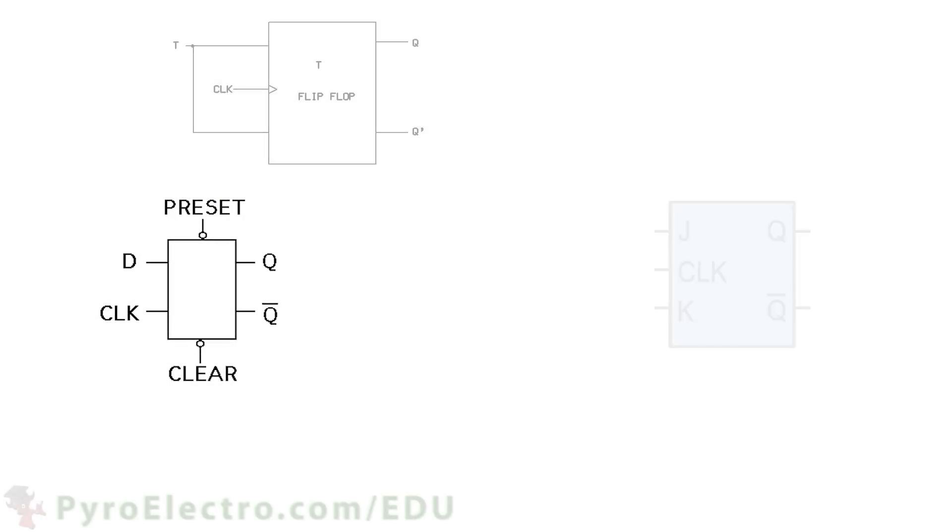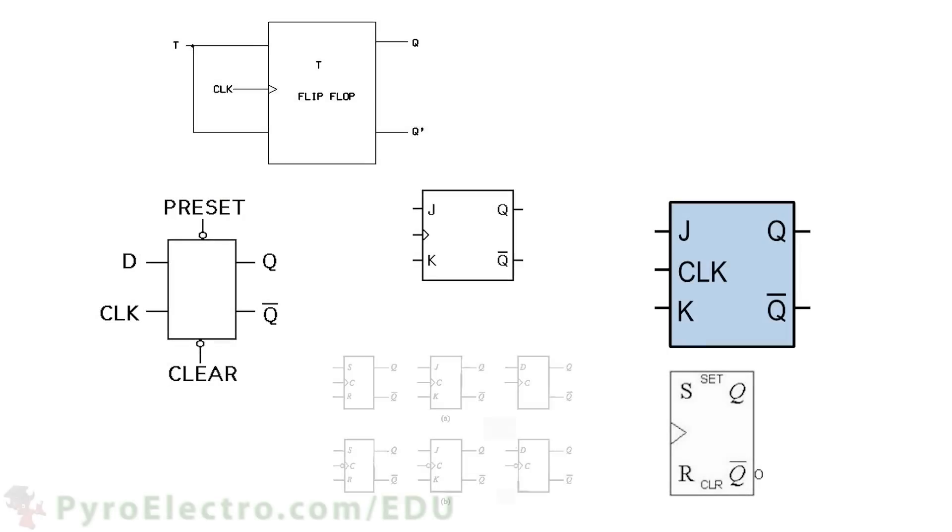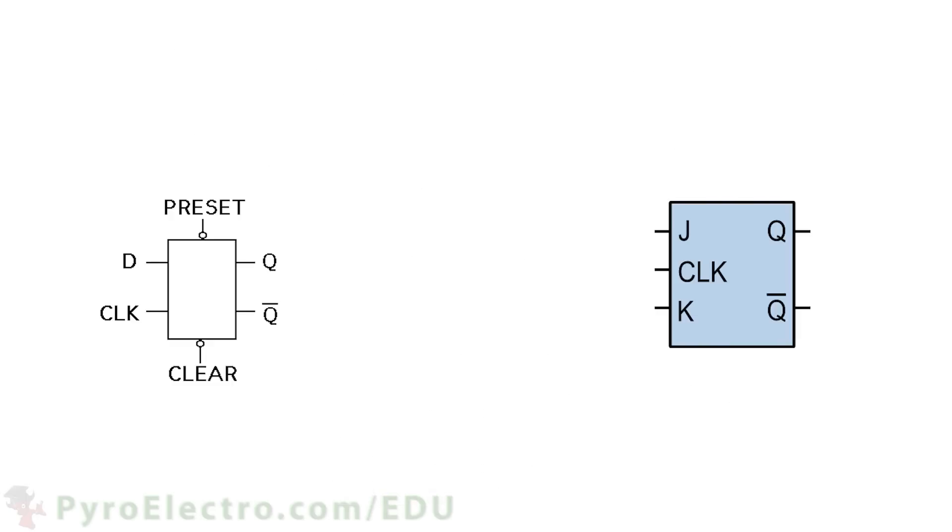There are many different types of flip-flops and they all have different functions. Since we're constrained on time, today we'll look at two of the most common flip-flops, the JK flip-flop with a logic symbol that looks like this and a D flip-flop with a logic symbol that looks like this.